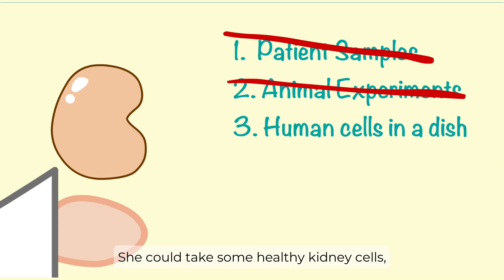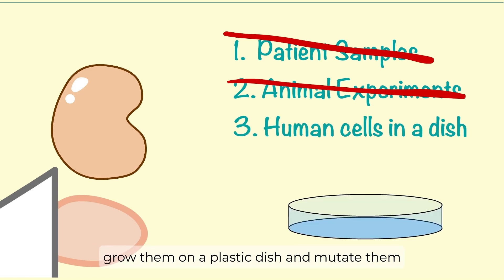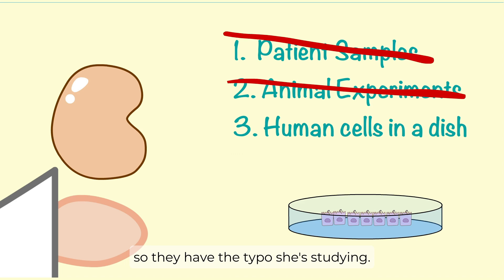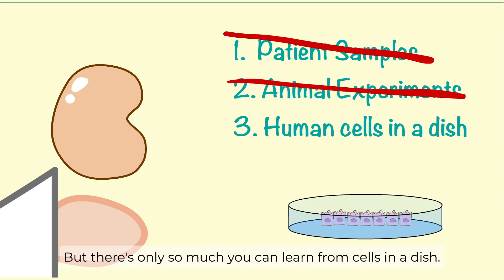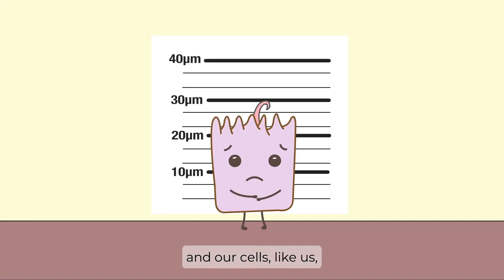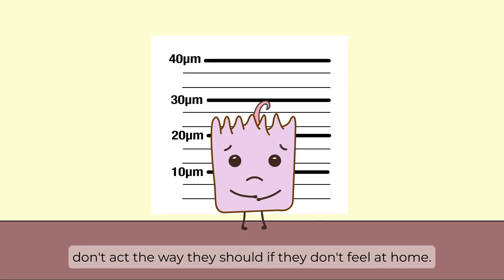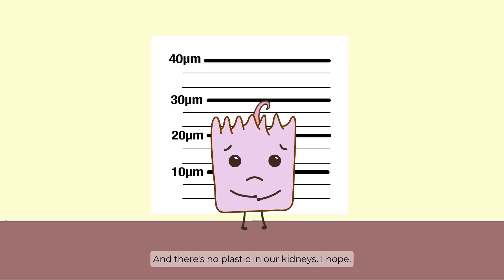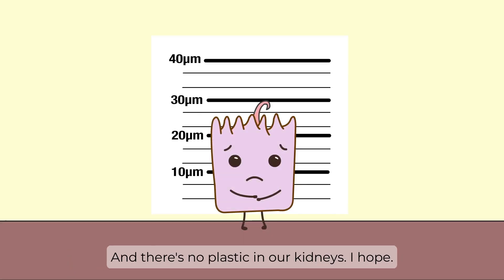She could take some healthy kidney cells, grow them on a plastic dish, and mutate them so they have the typo she's studying. But there's only so much you can learn from cells in a dish. Our bodies are complex environments, and our cells, like us, don't act the way they should if they don't feel at home. And there's no plastic in our kidneys.